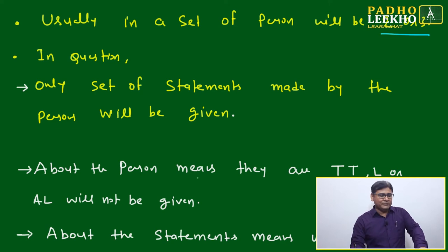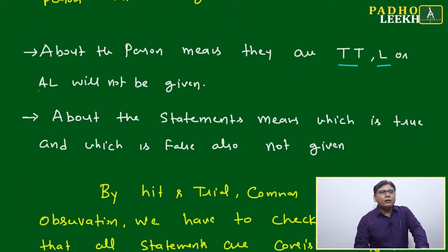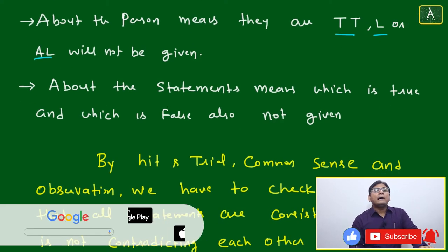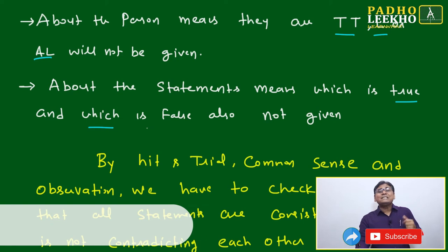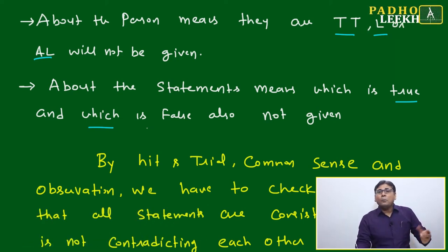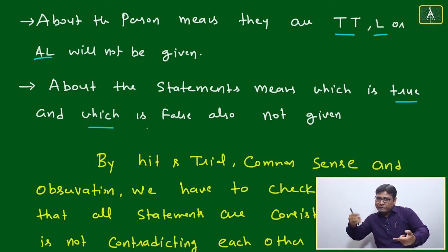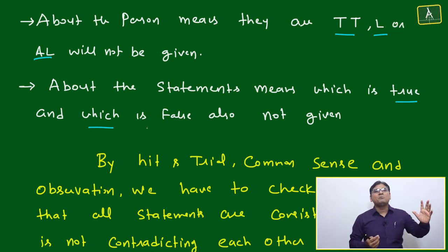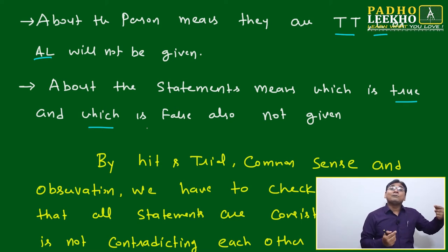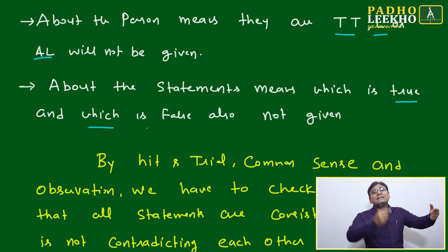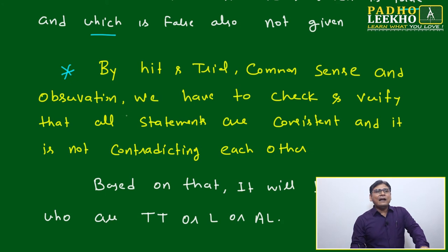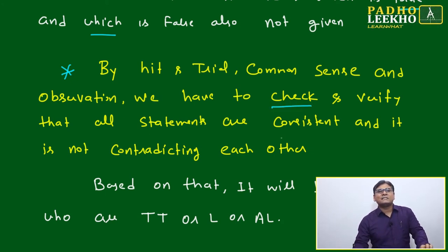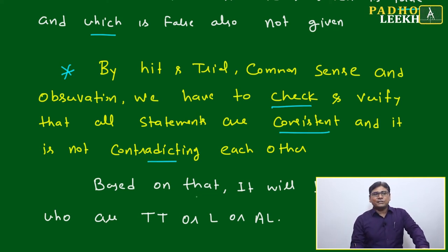So, the set of statements is given, but which person is truth teller, liar, or alternator is not given. Also, which statement is true or false is not given. You have to assume: suppose this statement is true — now based on that, all other statements should be consistent. If they are not consistent, your assumption was wrong and you try the opposite.